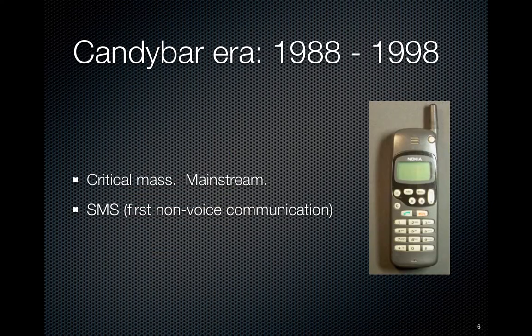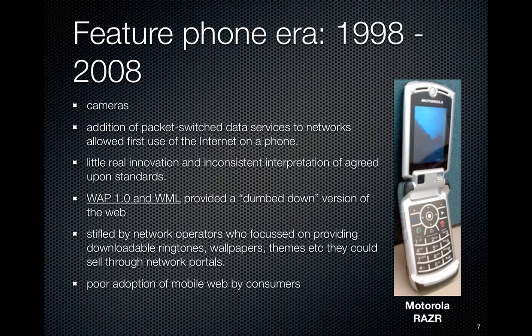Next is what you might call the candy bar era, from the very late 1980s through the 1990s. Components became smaller and batteries became better, resulting in something that could actually fit in your pocket. This is when mobile devices gained critical mass — enough people were using them that it became a viable market. SMS was first introduced during this period, which was the first example of non-voice communication over a cellular network — the precursor to internet communication over cellular.